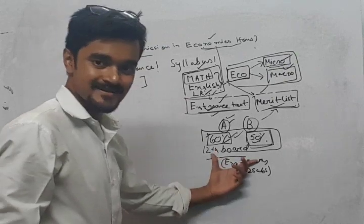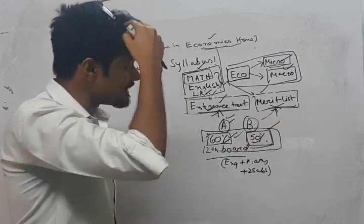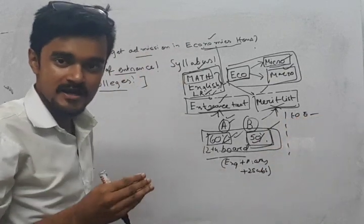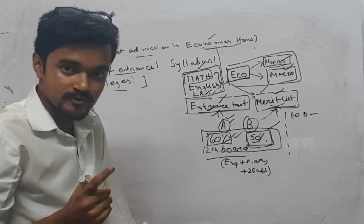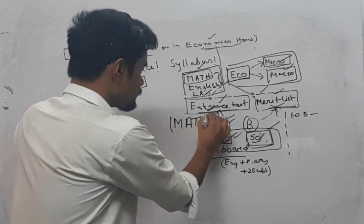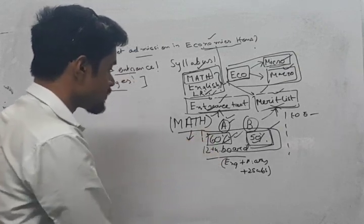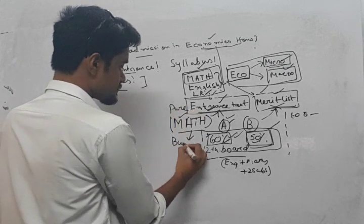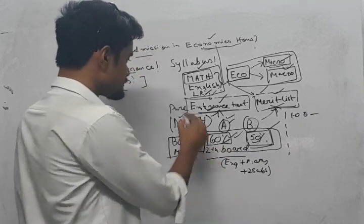Once you have the required percentage, you are qualified to sit for either the entrance exam or apply directly via merit list. One more important eligibility criterion: you must have pure mathematics in your 12th boards — not business mathematics that most commerce students take. This is pure mathematics, and this is a must for all who wish to pursue economics honors.